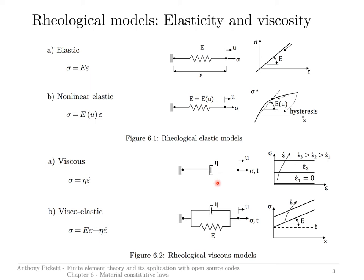The first one shown at the top is very simple linear elastic behavior. The material has a linear relationship between stress and strain, and that will continue until some kind of critical point is reached, where you might have another phenomenon take place like plasticity or damage.